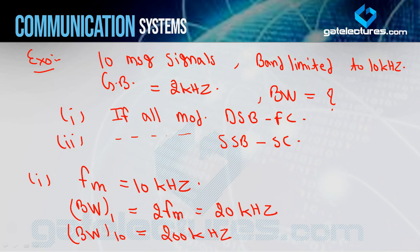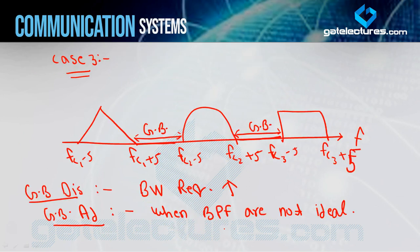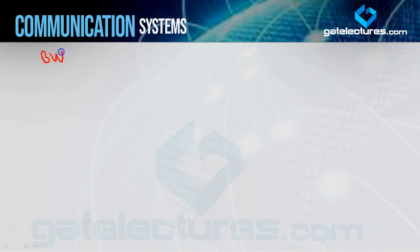Now adding the guard band: with 10 signals, there are 9 spaces between them, so there are 9 guard bands. Each guard band is 2 kHz, giving a total guard band bandwidth of 9×2 = 18 kHz. Therefore, the total bandwidth for DSB-FC = 200 + 18 = 218 kHz.